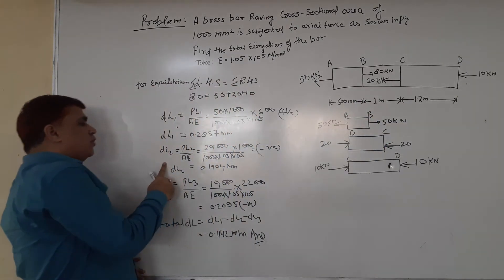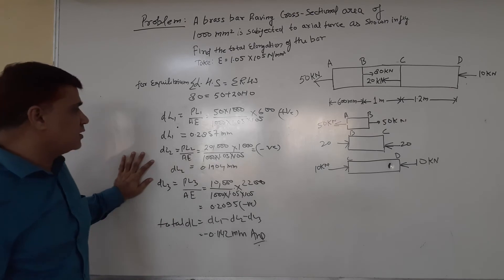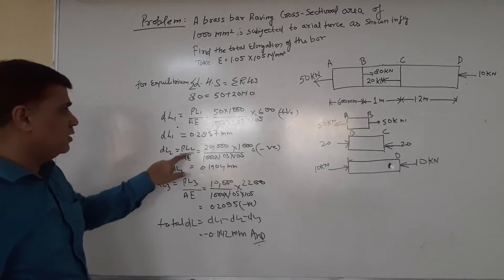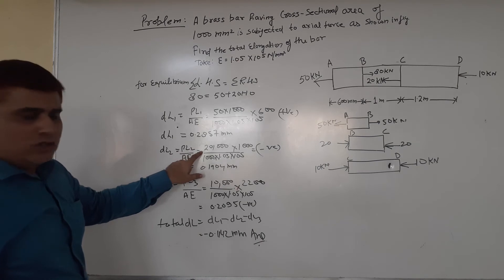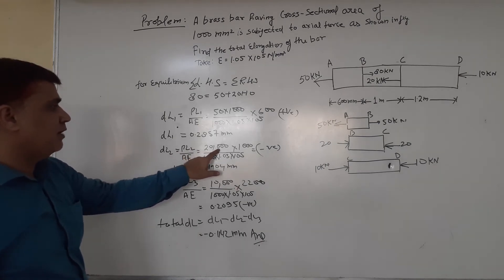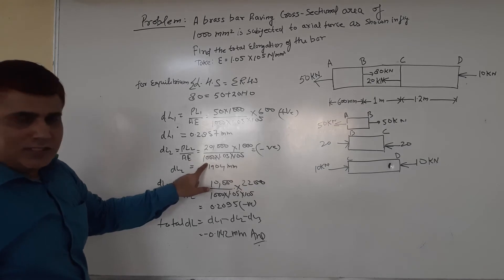Now we're calculating ΔL₂. ΔL₂ is basically PL₂ upon AE. Putting the value of load: 20 kN × 1000 = 20,000 N, divided by the area of 1000 mm².